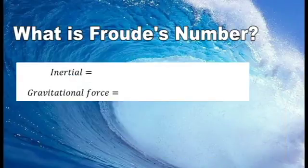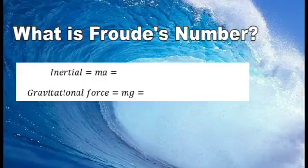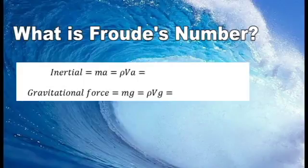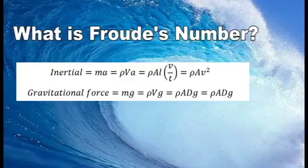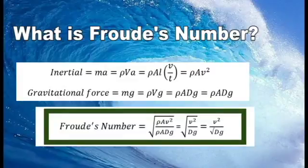Here's the derivation of Froude's Number. We take inertial force to equal mass times acceleration, and gravitational force to equal mass times gravitational acceleration. Remember, mass is equal to density times volume. By breaking down the components in the manner seen and plugging them into Froude's definition from earlier, we get that Froude's Number is equal to the velocity of the wave divided by the square root of depth times gravitational acceleration.